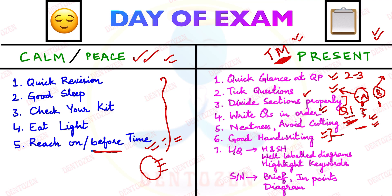For long questions, divide your answer into proper sections and subsections. Sometimes a long question is straightforward — for example, principal fibers of PDL — so write sections, subsections, draw a diagram, and highlight important points. But sometimes a long question has further parts — for example, 'Define periodontium and describe the PDL fibers.' Here, read your question properly: the first part on the definition may carry two to three marks, and the second part may carry seven to eight marks, so answer all parts accordingly.